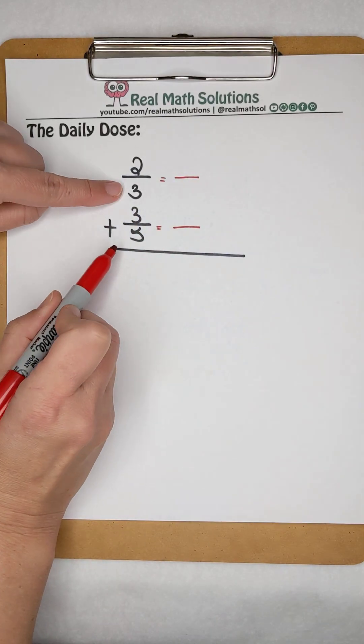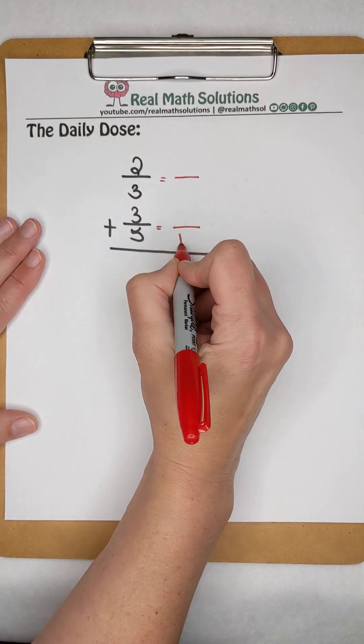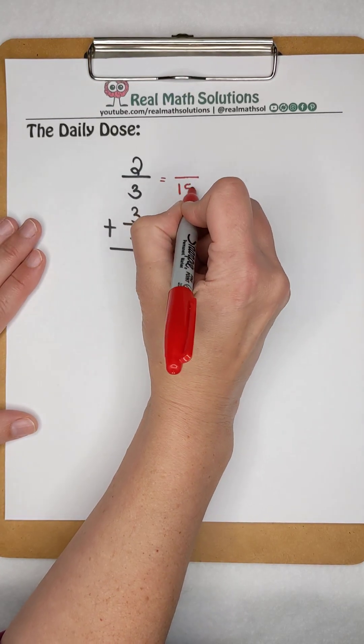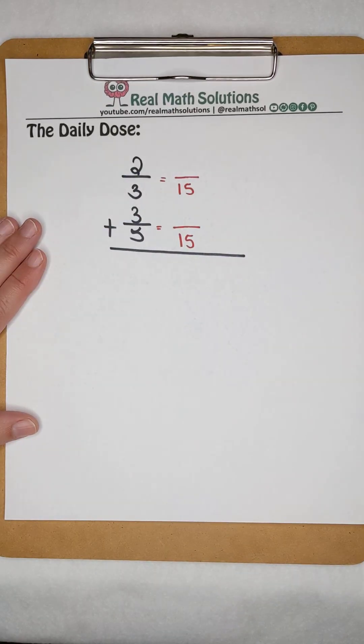For our common denominator, we're going to use the least common multiple of 3 and 5, which is 15. So we need to make two equivalent fractions with a denominator of 15.